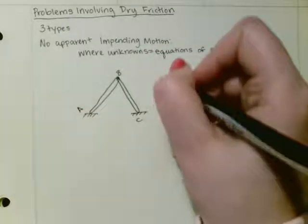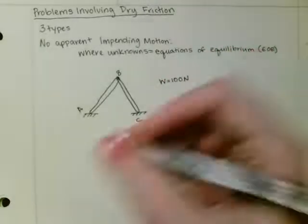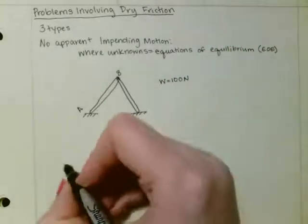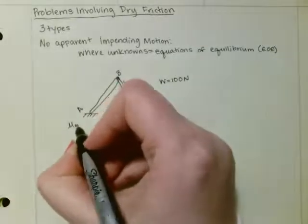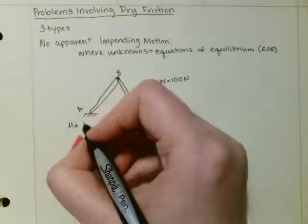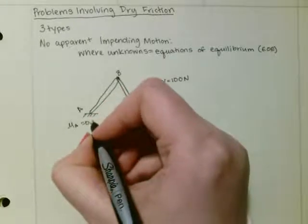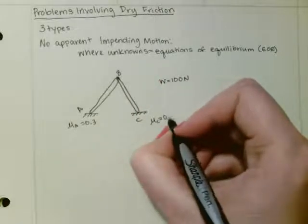And say that I knew that the weight of each of these bars was equal to 100 newtons. Say I was also given that the coefficient of friction on the A surface was 0.3, and on the C surface was 0.5.